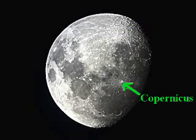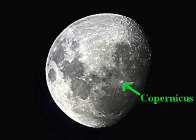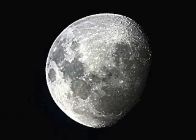Next is the crater Copernicus — both of these named after 16th century astronomers who made significant contributions to our understanding of the heavens. And the last place I want to point out is the first place where human beings walked on another body in the solar system, which is the Sea of Tranquility, or Mare Tranquilitatis.